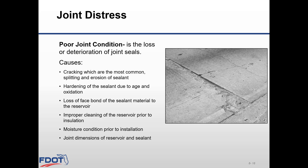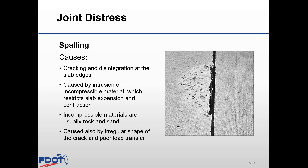Joint distress occurs when poor joint condition or spalling occurs. Poor joint condition is the loss or deterioration of joint seals. Causes include cracking, splitting and erosion of sealant, hardening due to age and oxidation, loss of face bond of the sealant material to the reservoir, improper cleaning of the reservoir prior to installation, moisture conditions prior to installation, and incorrect joint dimensions of the reservoir and sealant. Spalling is caused by cracking and disintegration of slab edges due to intrusion of incompressible material — usually rock and sand — which restricts slab expansion and contraction, as well as irregular crack shape and poor load transfer.